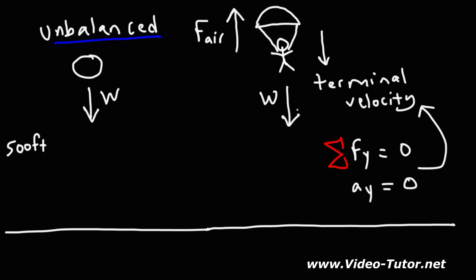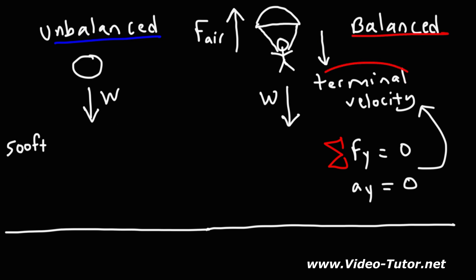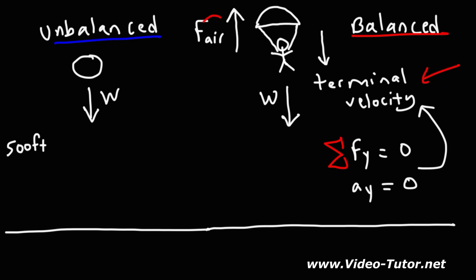The speed is no longer increasing as he falls, so at that point this is a balanced situation — air resistance and the weight force balance each other out once he achieves terminal velocity. In the beginning, when you drop an object, the forces are unbalanced, but as speed increases, air resistance increases. Once you reach terminal velocity, the two forces are equal, and at that point the forces are balanced. That's it for this video — hopefully this gave you a good introduction to balanced and unbalanced forces.